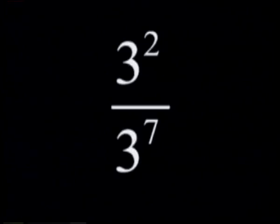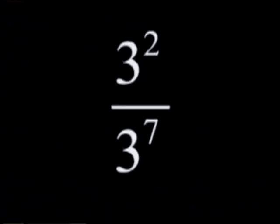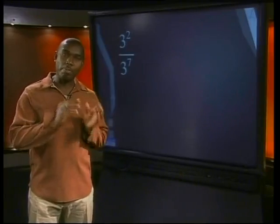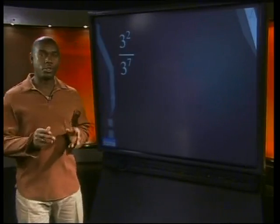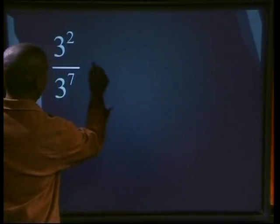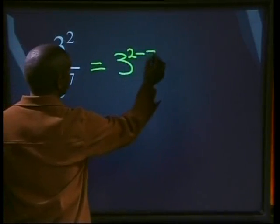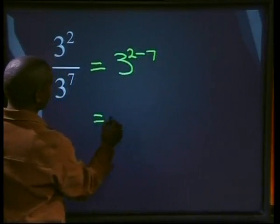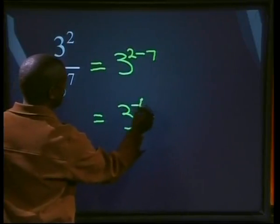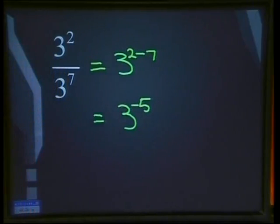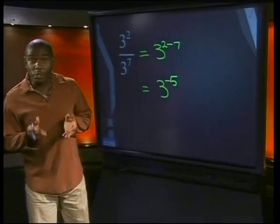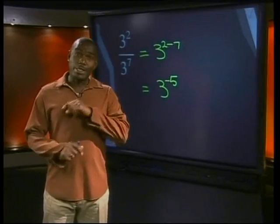But what if we have a number like this: three to the power two divided by three to the power seven? The number in the denominator is a higher power of three than the number in the numerator. The law for division of powers with the same base still applies, so now we have three to the power two take away seven, which will give us three to the power negative five.